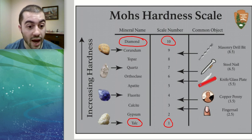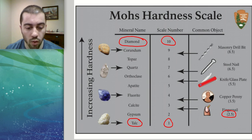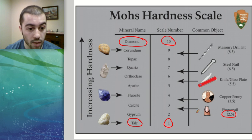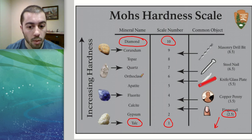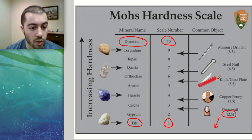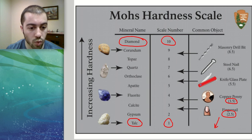In a lab, we use everyday objects to test a mineral's hardness. A fingernail has a hardness of 2.5 — if your fingernail can scratch the mineral, the mineral is softer than 2.5. A copper penny has a Mohs rating of roughly 3.5, and a steel nail is harder still. If you can scratch the mineral with a tool, you know its hardness must be lower than that tool's rating.